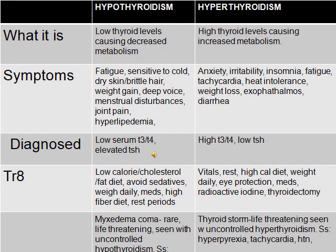Hypo versus hyperthyroidism: hypothyroidism is low thyroid levels causing decreased metabolism, and hyperthyroidism is high thyroid levels causing increased metabolism. Think about someone with a decreased metabolism — they're going to be fatigued, sensitive to cold, have dry skin, brittle hair, weight gain, a deep voice, menstrual disturbances, joint pain, and hyperlipidemia.